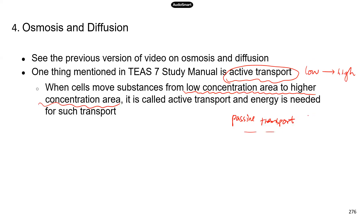Passive transport, on the other hand, involves molecules moving from high to low concentration, and it does not require energy. Active transport goes from low to high concentration against the gradient and requires energy; passive transport does not. There hasn't been a specific question on just active transport yet, but this is important information you need to know in case it appears on the test.